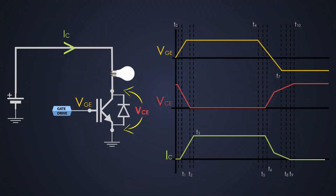Let's see the dynamic characteristics of this IGBT during the turn-off period. The time when collector-to-emitter voltage rises from 10% to 90% of its maximum value during turn-off is called turn-off delay time — this is from nearly T6 to T9. The time it takes for collector current to fall from 90% to 10% of its rated value during turn-off is known as fall time, which is between T6 and T8. The time between gate voltage reaching 90% of its value and the collector current reaching 10% of the maximum value is the turn-off time of the IGBT — here it is T5 to T8.